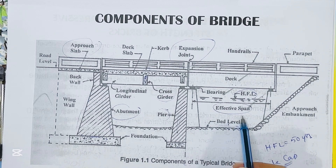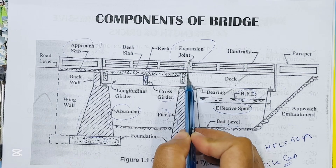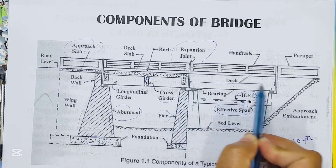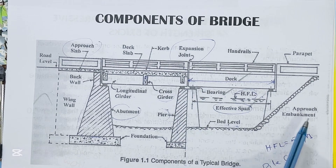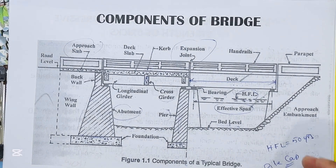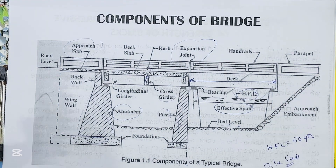Effective span is the distance between the centers of two supports — from this point to this point. Clear span is the space between inside surfaces of piers or other vertical supports. So this is enough for today — subscribe the channel and thanks for watching the video.